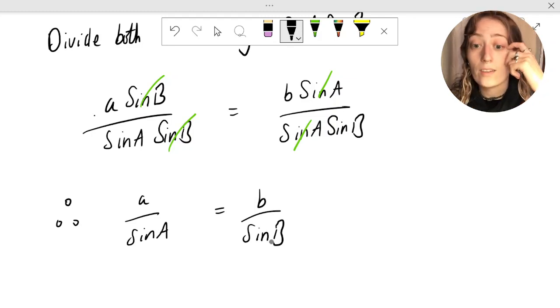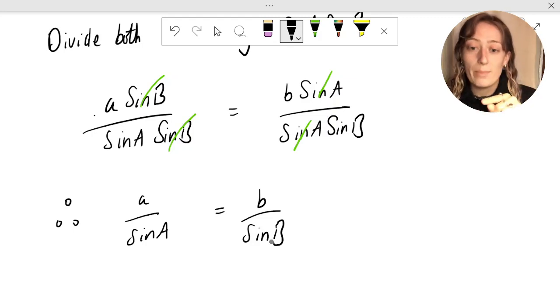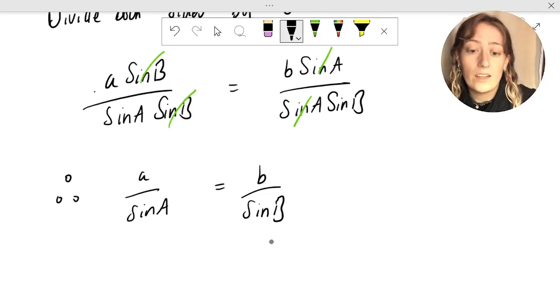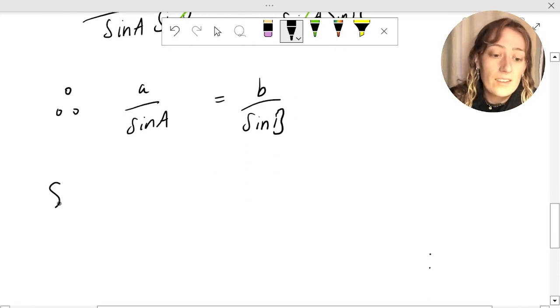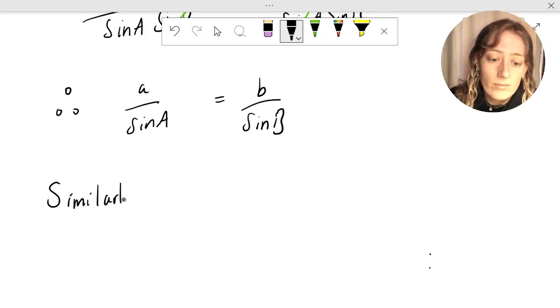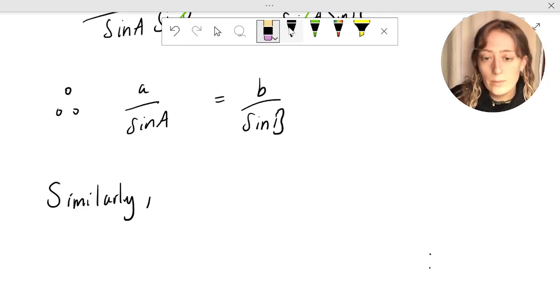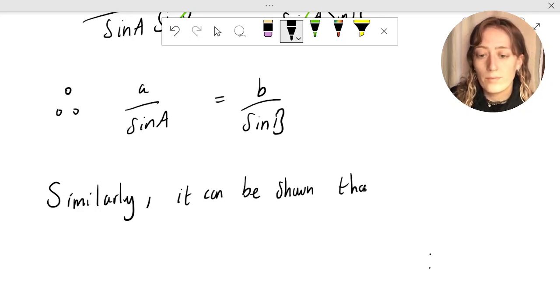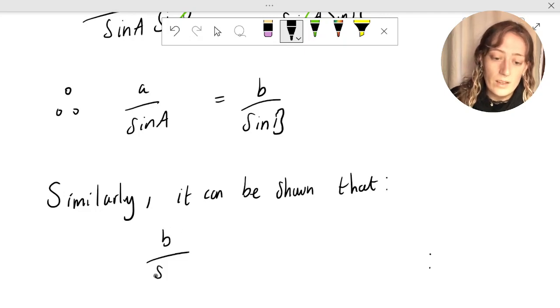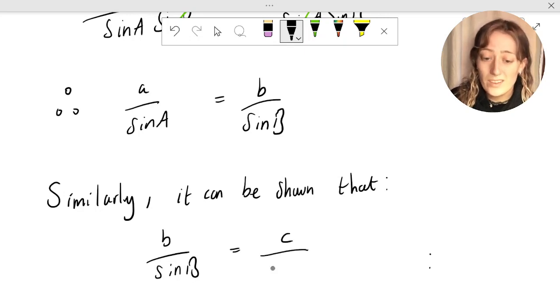Now, the only bit of the formula that's missing is our c over sine c part. But we can prove in a very similar method that b over sine b equals c over sine c. In maths, we don't think it's necessary to do the exact same proof out again because we've already shown that the maths is there and works. So it's completely valid to say similarly, it can be shown that b over sine b is also equal to c over sine c.